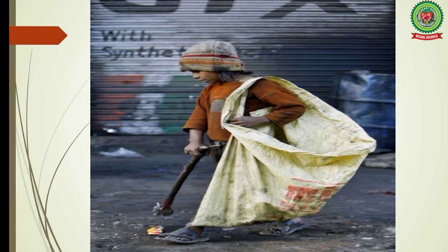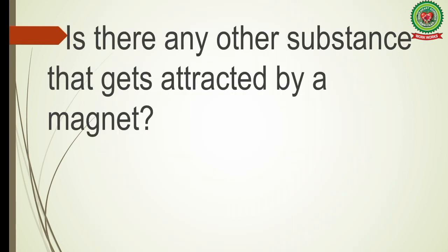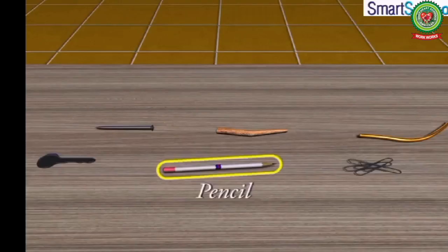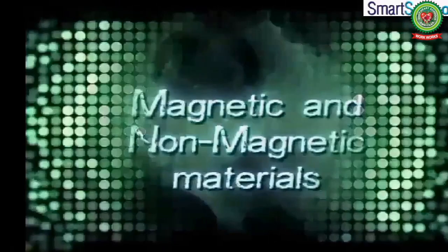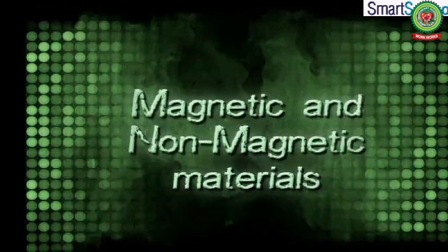Iron gets attracted towards a magnet. Are there other substances that get attracted by a magnet? Yes, there are other substances also that are attracted by a magnet. Such substances are called magnetic substances. On the other hand, substances that are not attracted by a magnet are called non-magnetic substances. Let us understand this topic: magnetic and non-magnetic materials.